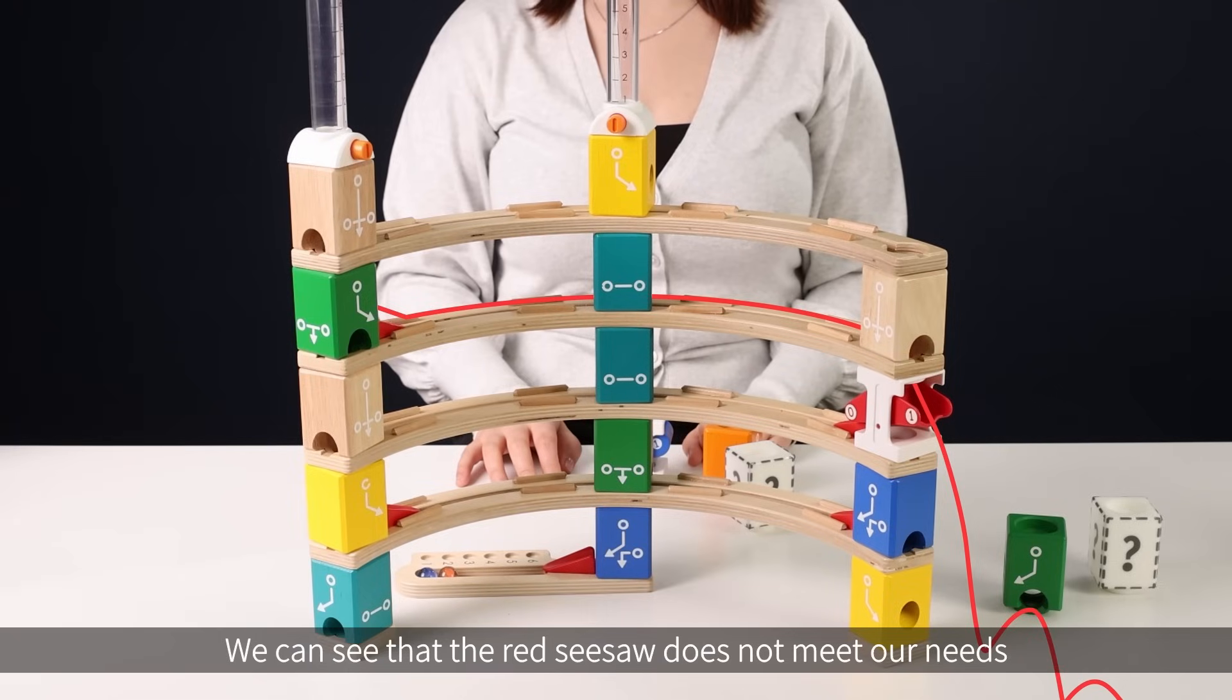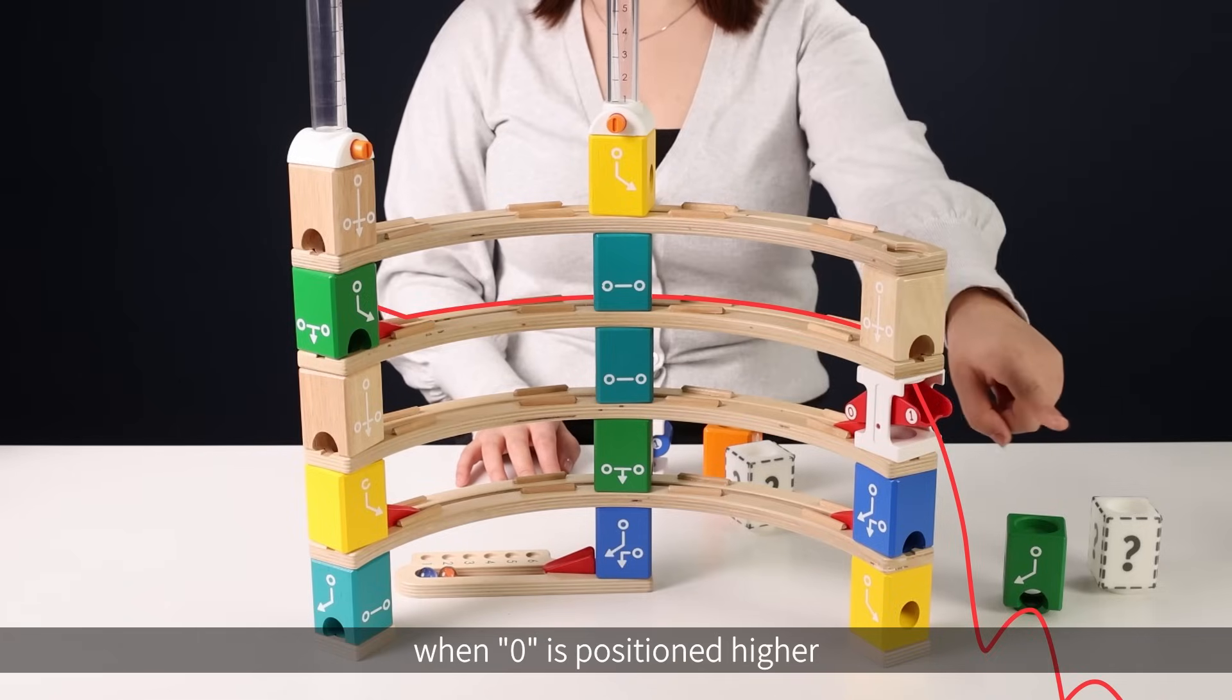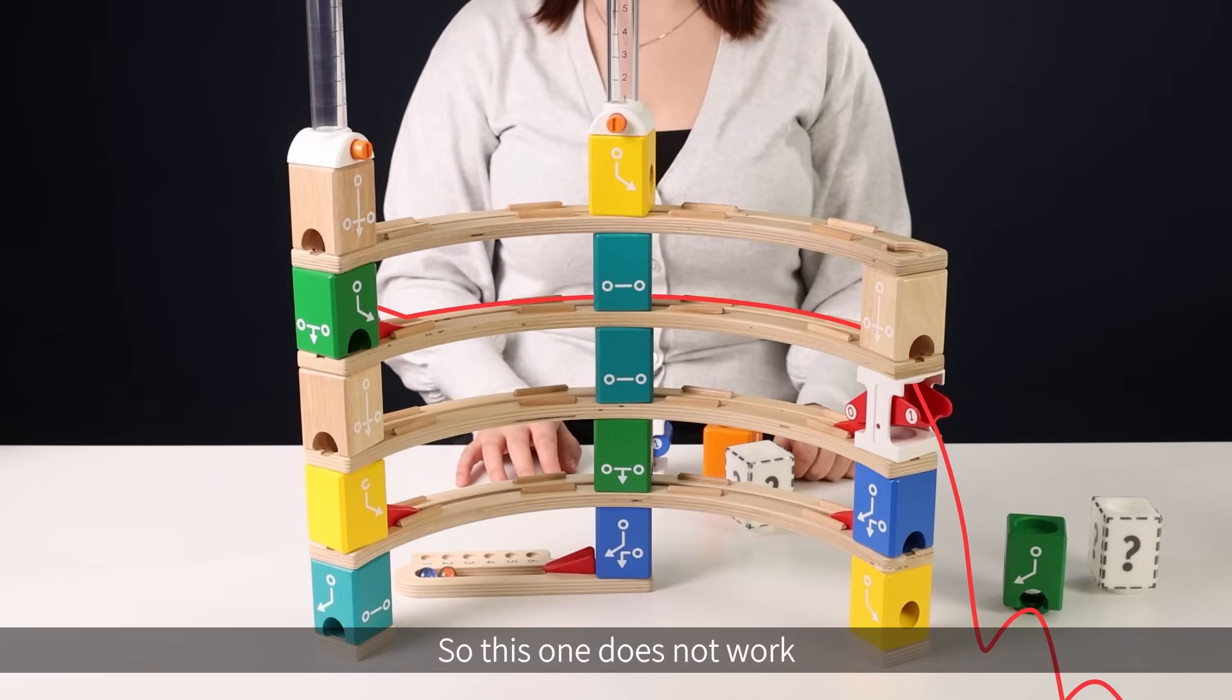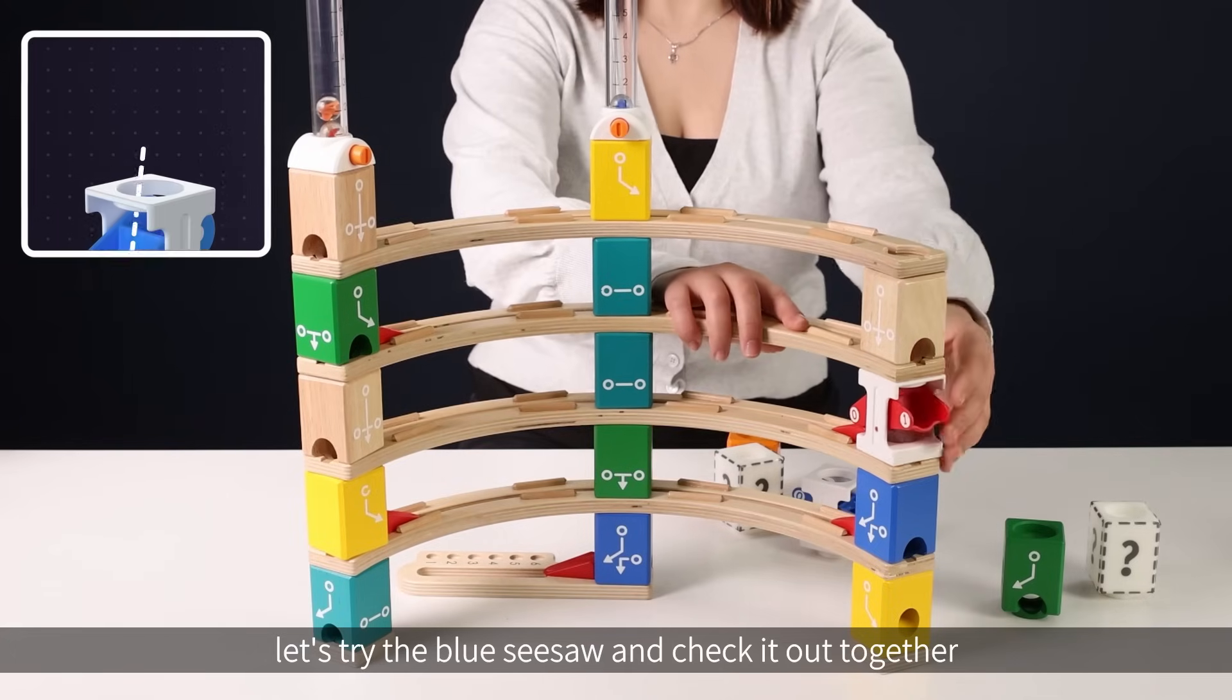We can see that the red seesaw does not meet our needs since the marble rolls out of the building when zero is positioned higher, so this one does not work. Now, let's try the blue seesaw and check it out together.